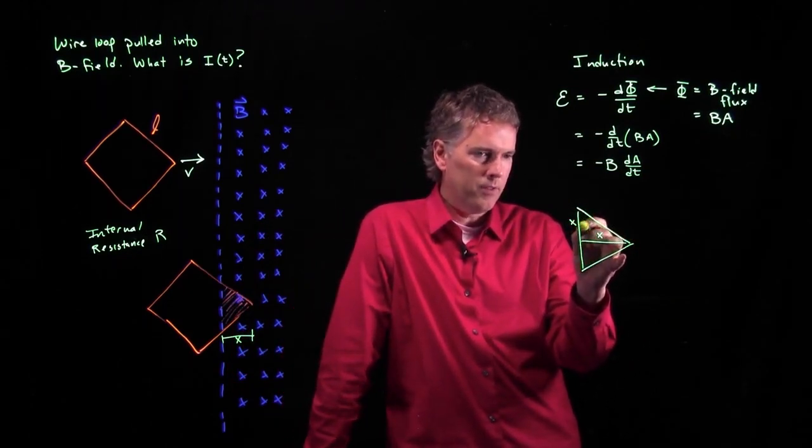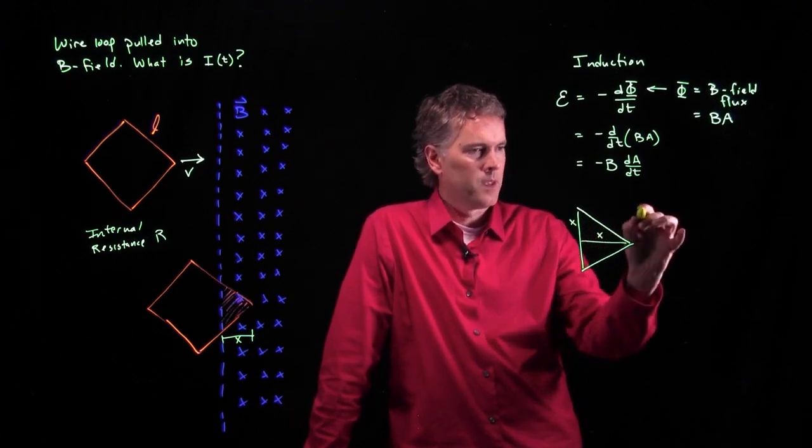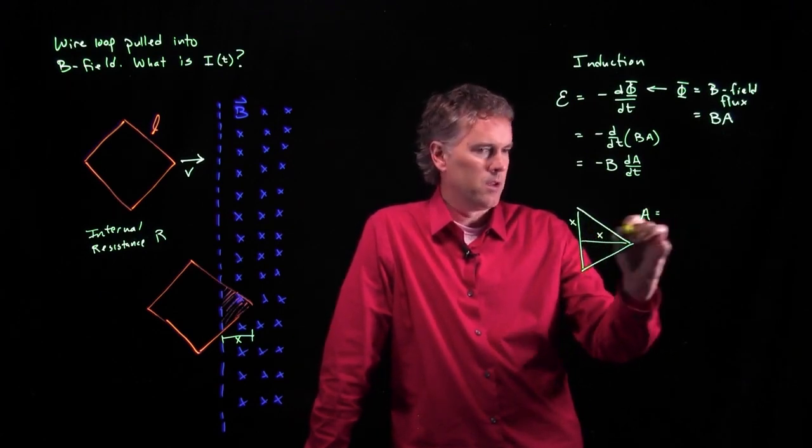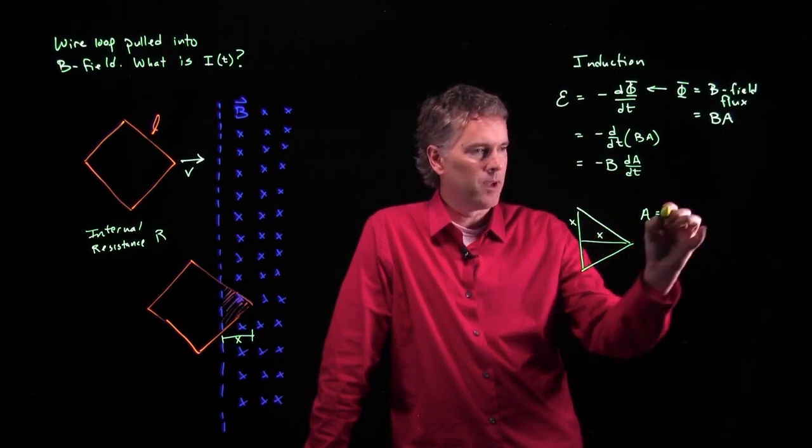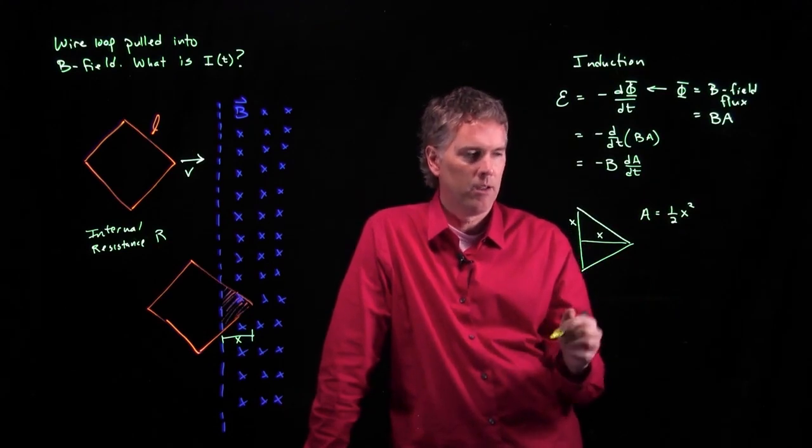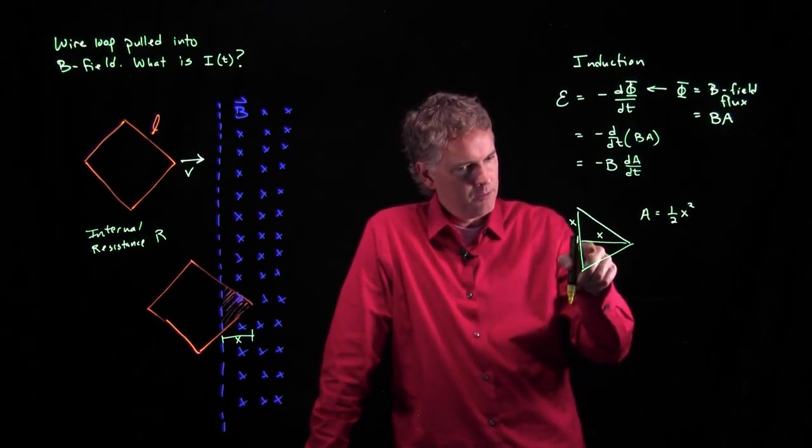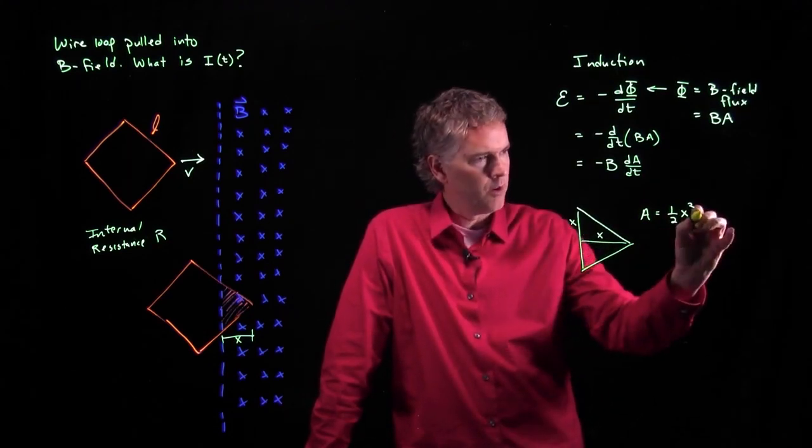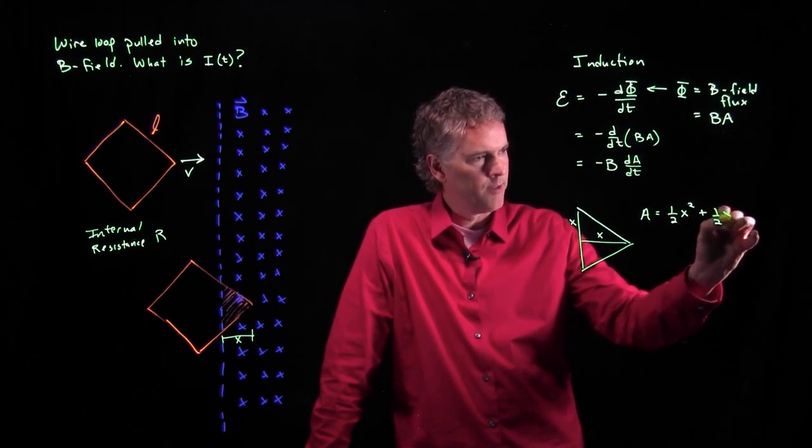So what is the area of this whole thing? Well, the area of this little triangle up here is going to be 1/2 the base times the height, which is 1/2 X times X, so I get an X squared. But the area of this little triangle down here is also 1/2 X squared.